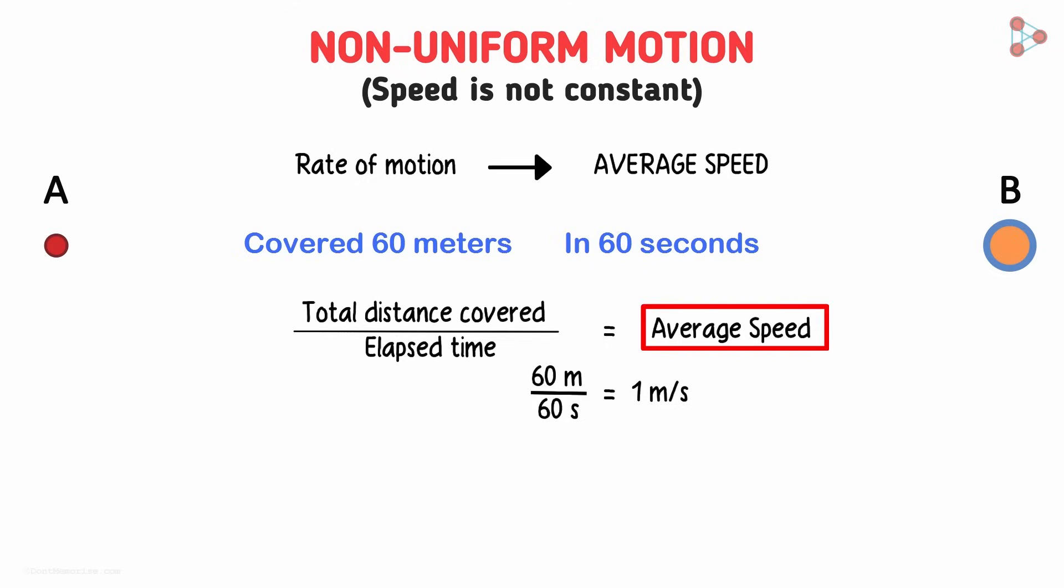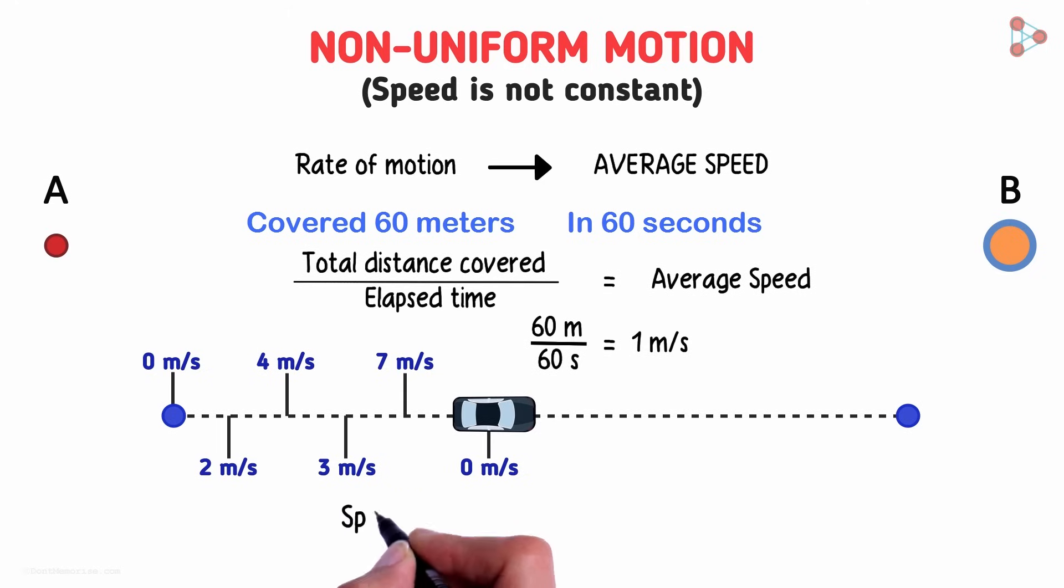Average speed is a good way to know when you will reach a certain destination in traffic. There will be times when you will be driving fast and other times you will be stuck. Hold on, at every instance you are moving at some speed. It may be 0 meters per second when you are stuck, or 2 meters per second or even 4 meters per second. Do you know what the speed at each instant is called? It is called instantaneous speed.